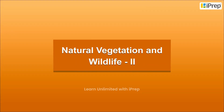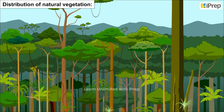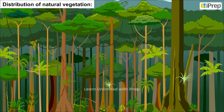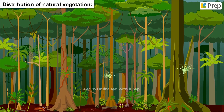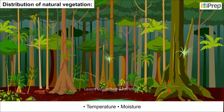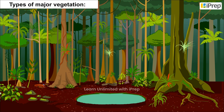Natural vegetation and wildlife: the distribution of natural vegetation depends on temperature, moisture, and types of major vegetation.